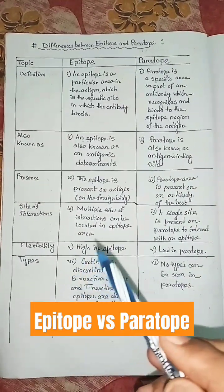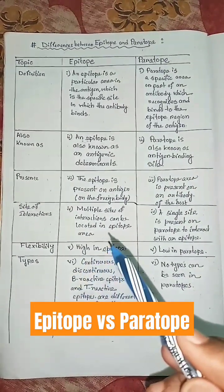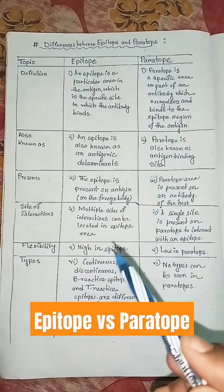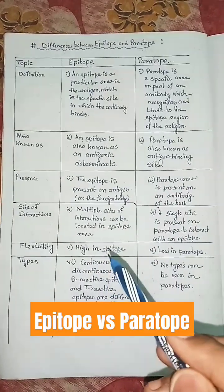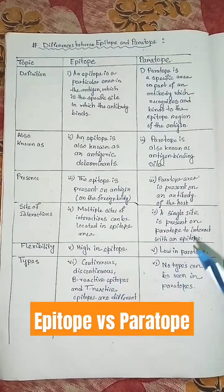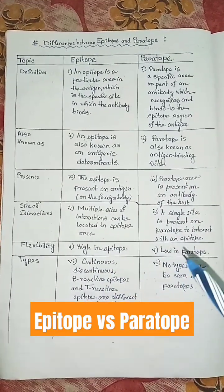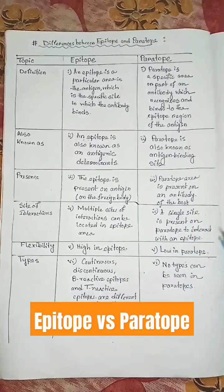Flexibility: in the epitope, high flexibility is present, but in the paratope, low flexibility is present.